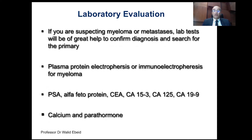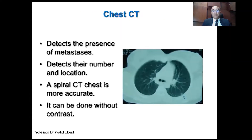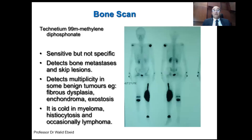Chest CT is a must while staging a patient with a malignant bone tumor — it detects the presence, number, and location of metastasis. Spiral CT is more accurate, and CTs are done without contrast. It cannot be replaced by a plain X-ray of the chest. A bone scan is a very sensitive but not specific study, because infections and fractures could also show uptake. However, the bone scan is of value to detect skip lesions, bone metastasis, and multicentric tumors. We should also remember that certain tumor types are cold on bone scans, like myeloma and histiocytosis.